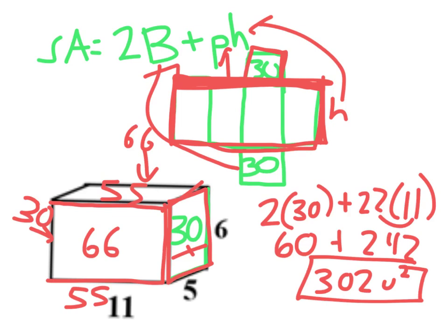You have two 55s, two 66s, two 30s. Add them all together, you'll still get that answer of 302.